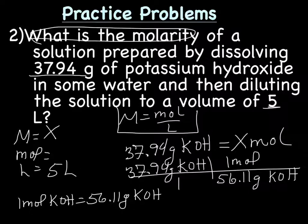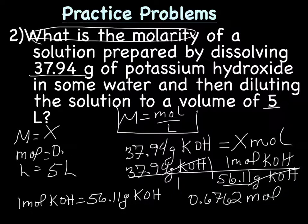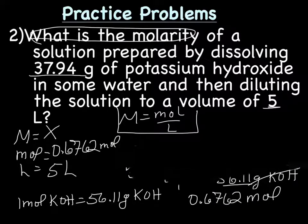Then we put that stuff into our grid, setting it up so that our units cancel out. So we have 56.11 grams KOH on the bottom, and one mol on the top. And we make sure our units cancel out, and they do. From here, we multiply across the top, bottom, and divide. And that gave me 0.67617, and so forth. We're going to have four sig figs, so our final answer will be 0.6762, so we'll put that in our list.